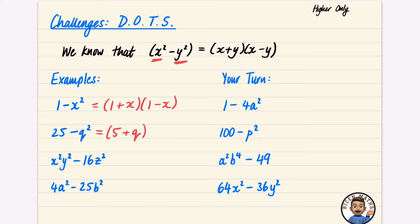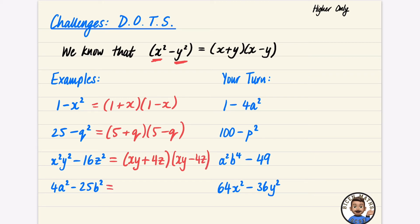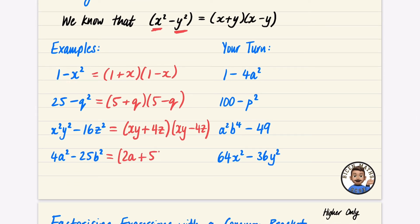For the next example, the square root of the first term is xy, and the square root of 16z squared is 4z, giving (xy+4z)(xy−4z). Then for 4a squared minus 25b squared: the square root of 4 is 2 and the square root of a squared is a, giving 2a; the square root of 25 is 5 and the square root of b squared is b, giving 5b. So the answer is (2a+5b)(2a−5b). Pause and have a go at the practice questions.